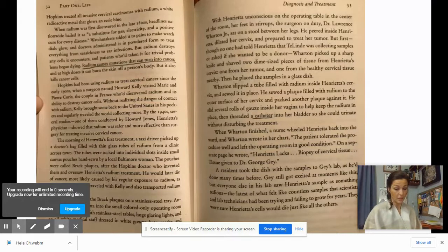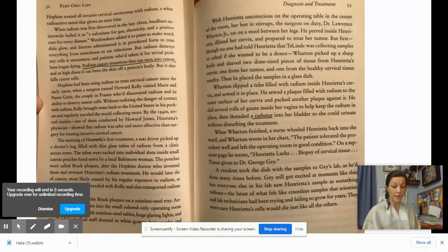He peered inside Henrietta, dilated her cervix and prepared to treat her tumor. But first, though no one had told Henrietta Talinde was collecting samples or asked if she wanted to be a donor, Wharton picked up a sharp knife and shaved two dime sized pieces of tissue from Henrietta's cervix. One from her tumor and one from the healthy cervical tissue nearby. Then he placed the samples in a glass dish. Wharton slipped a tube filled with radium inside Henrietta's cervix and sewed it in place. He sewed a plaque filled with radium to the outer surface of her cervix and packed another plaque against it. He slid several rolls of gauze inside her vagina to help keep the radium in place, then threaded a catheter into her bladder so she could urinate without disturbing the treatment. When Wharton finished, a nurse wheeled Henrietta back into the ward and Wharton wrote in her chart, The patient tolerated the procedure well and left the operating room in good condition. On a separate page he wrote, Henrietta Lacks biopsy of cervical tissue given to Dr. George Gey.